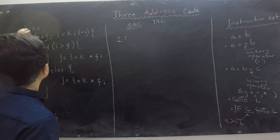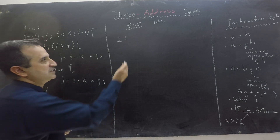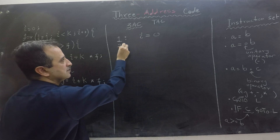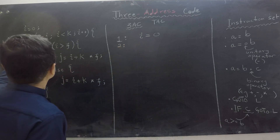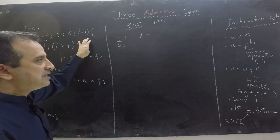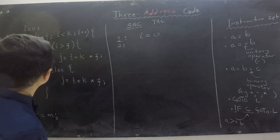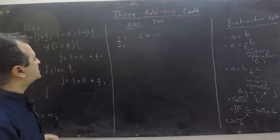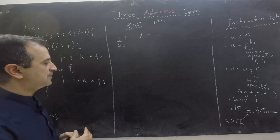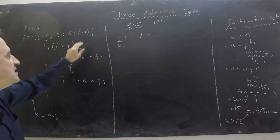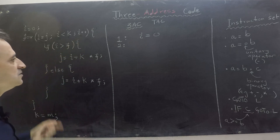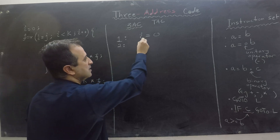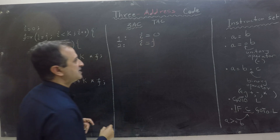Let's start with the first instruction, which is already in three address format, so we write: i equals zero — no semicolon in three address instruction sets. Now we have to write the for-loop instruction. The initialization i equals j is executed before the start of the loop, the condition is checked with every iteration, and the increment is executed at the end of the loop. So writing the initialization: i equals j — this is a valid three address instruction.